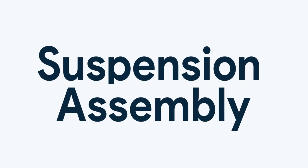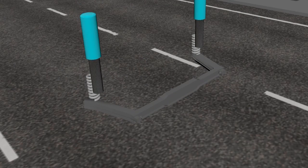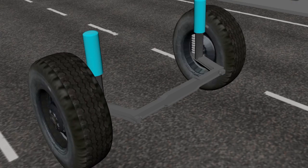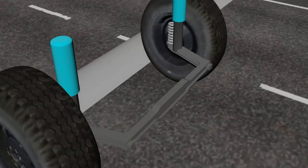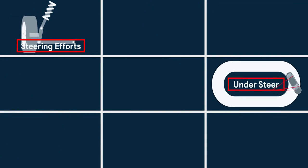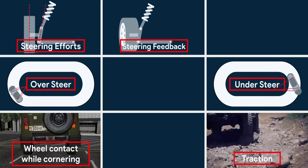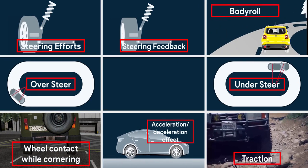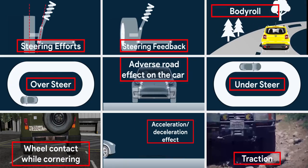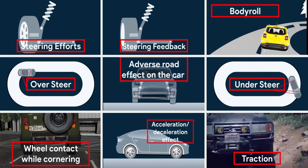Suspension assembly. It is not just a linkage connecting the wheels to the frame with springs and dampers, nor does it just allow the wheels to go up and down. The whole vehicle dynamics — like steering effort, understeer and oversteer control, steering feedback, traction, wheel contact while cornering, body roll, acceleration/deceleration effects, and adverse road condition effects on the car — are decided by the suspension linkage used in your car.